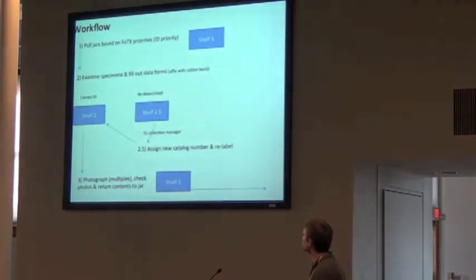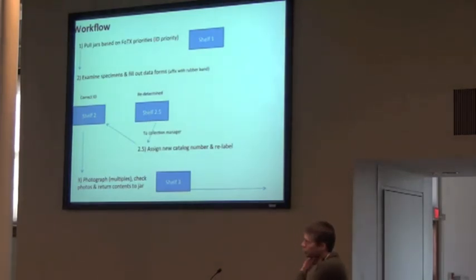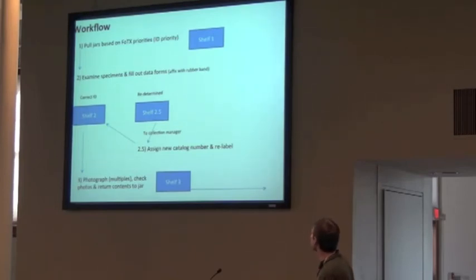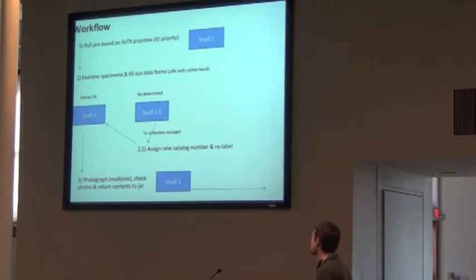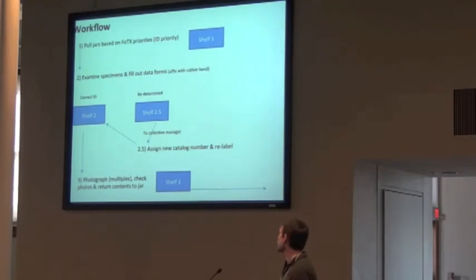Our workflow is basically a whole jar, based on whatever Fishes of Texas priorities we're working on — they're almost all ID priorities, looking at one species or some species from an area. We put them on shelf one, then we examine those specimens, fill out our data forms, and fix them. If they're correctly identified, they go to shelf two. If they're redetermined, they go to shelf 2.5, where they can go to the collection manager and get assigned a catalog number and label, and then back to shelf two to continue the process.